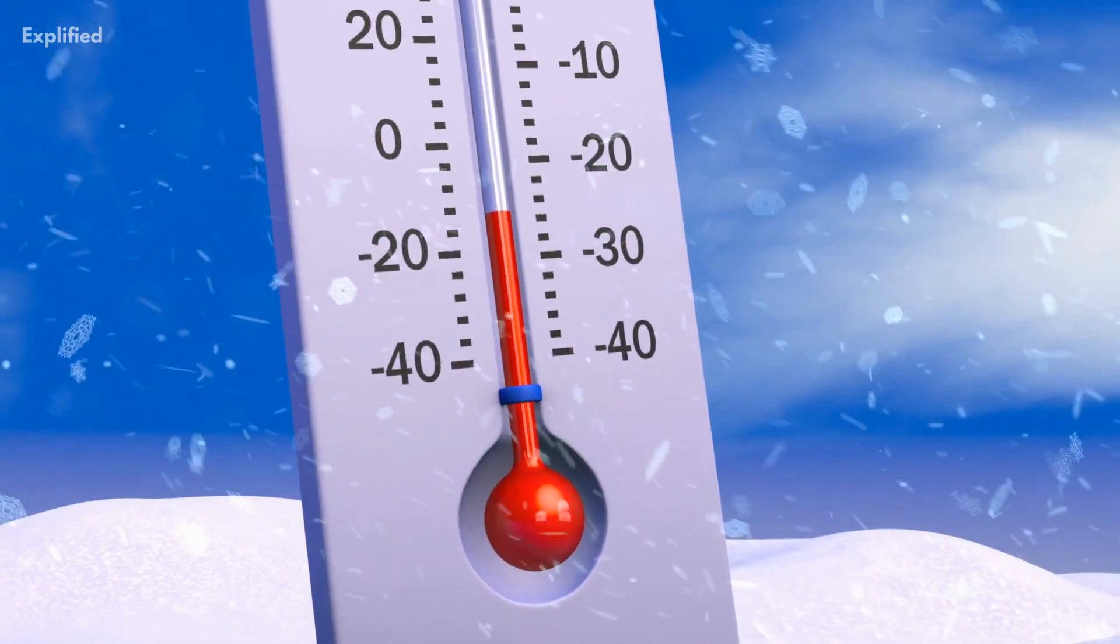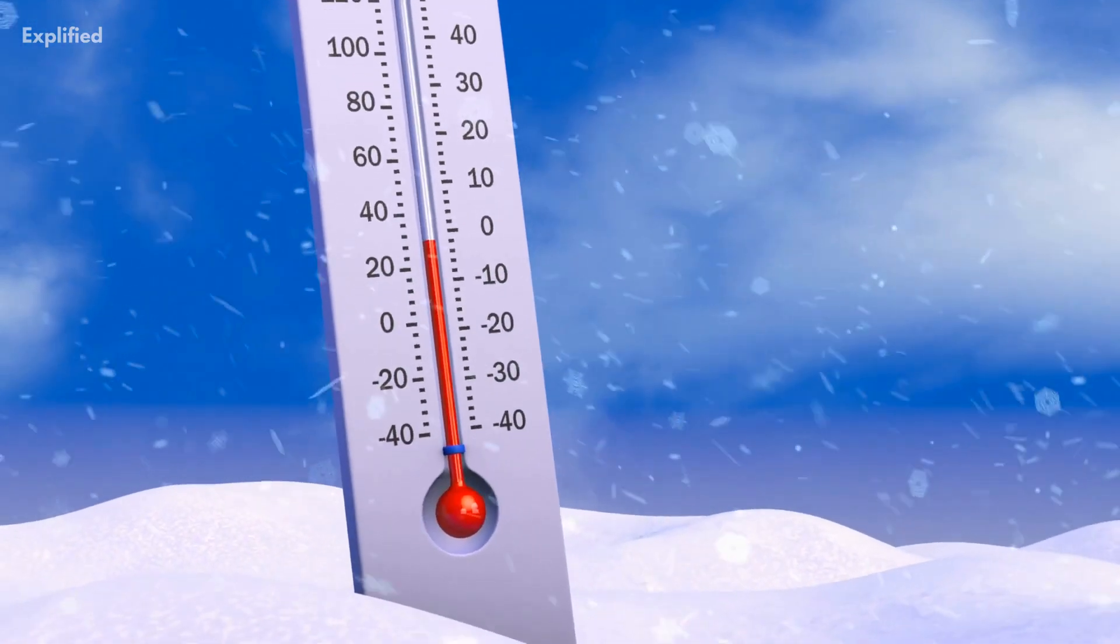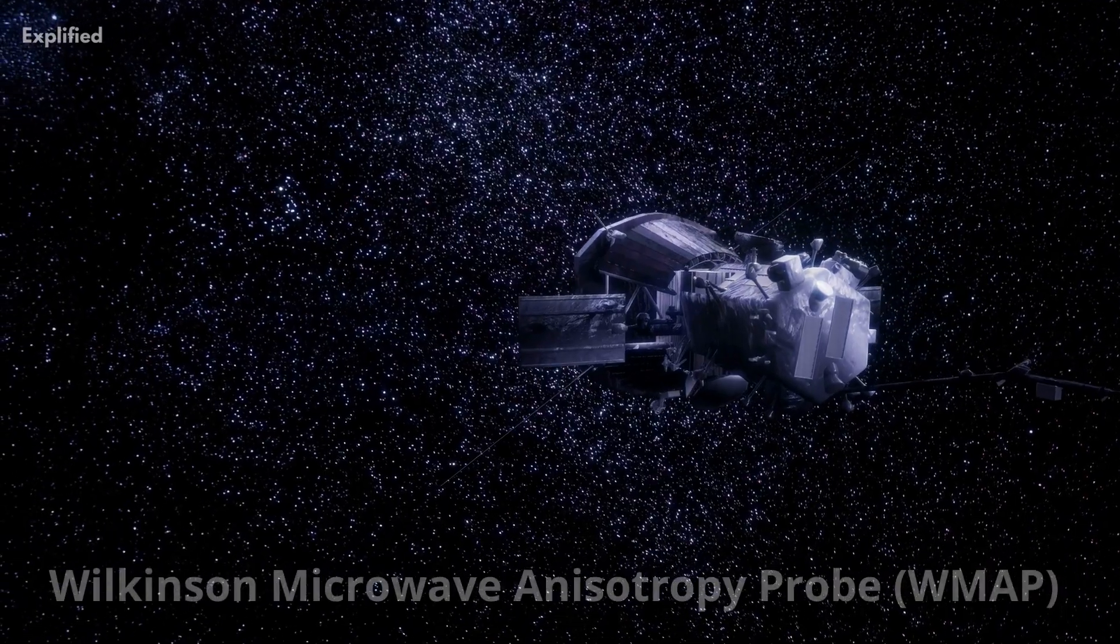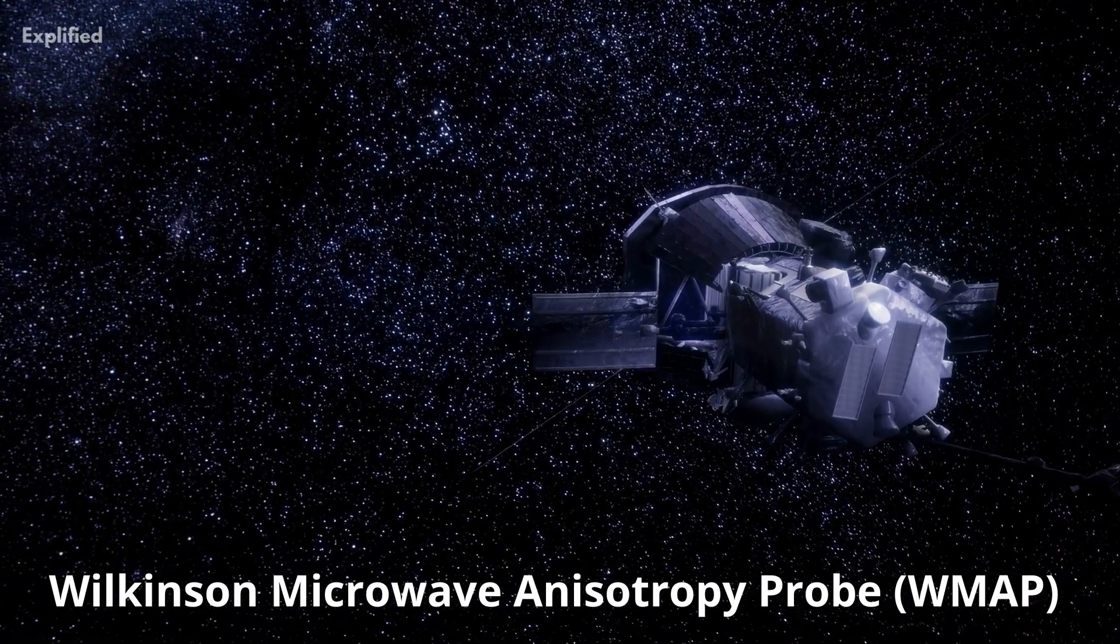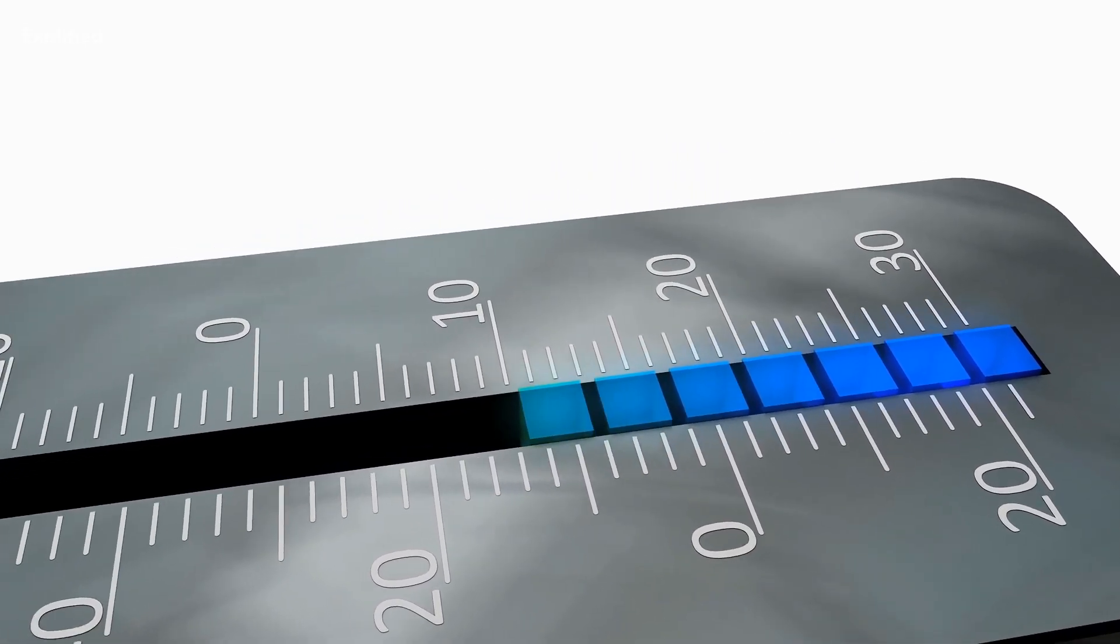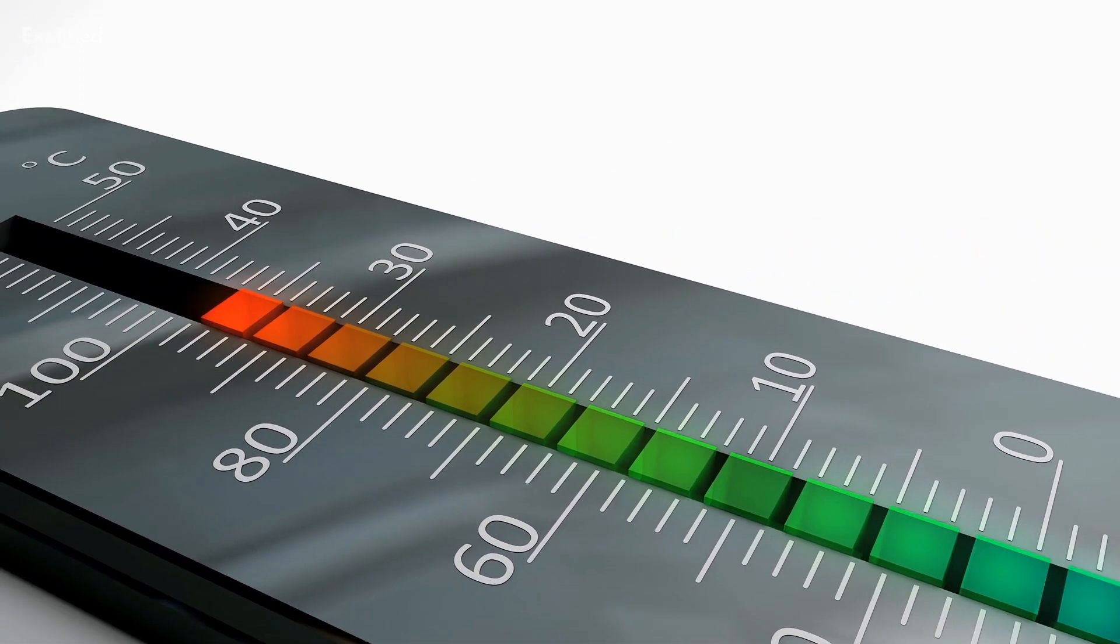NASA's Wilkinson Microwave Anisotropy Probe (WMAP) has previously found evidence of tiny temperature fluctuations on the order of a thousandth of a degree in its surveys.